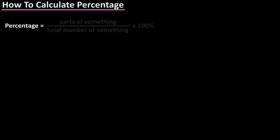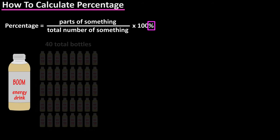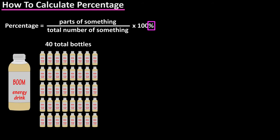The formula for percentage is the number of parts of something over the total number of something, and take that result and multiply by 100 percent. This symbol represents percentage. As an example, if you created something, say your own energy drink, and manufactured 40 bottles of it, then the total number of your something is the 40 bottles.